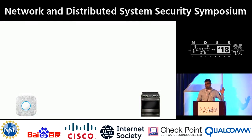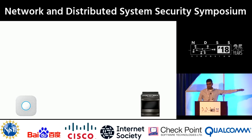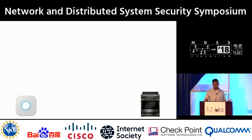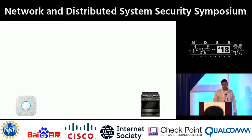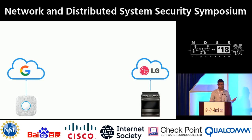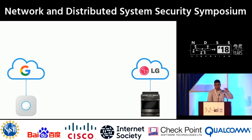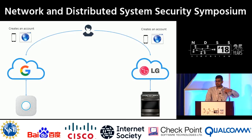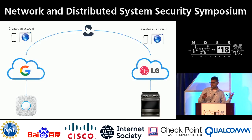Say that you bought two new smart devices — a Google Nest smoke detector and an LG oven. These are smart devices, so you can actuate them over the internet. Generally this happens through a cloud service run by the device manufacturers: Google runs the Google Nest service, LG runs their own service. As a user, you use some kind of client, like a smartphone app or a browser, create an account on these cloud services, and then actuate these devices.